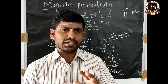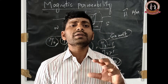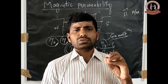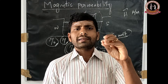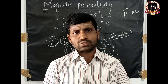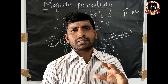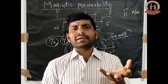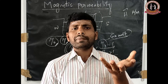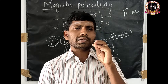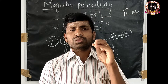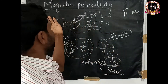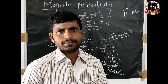Magnetic permeability is defined as the ability of the material to allow passage of magnetic field lines through it, or the degree of penetration of the magnetic field lines through it. This is called magnetic permeability.